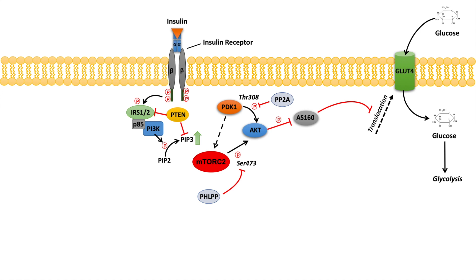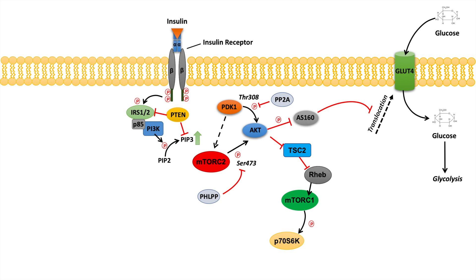AKT has many different downstream effects, but one to focus on with regards to the insulin signaling pathway is its regulation of the mTOR complex 1 pathway. AKT will inhibit an inhibitor, tuberous sclerosis complex 2, or TSC2. Generally without AKT, TSC2 will inhibit RHEB, which is an activator of mTOR complex 1, keeping mTOR complex 1 inhibited. However, when AKT is activated, it inhibits TSC2, which leads to the activation of mTOR complex 1.